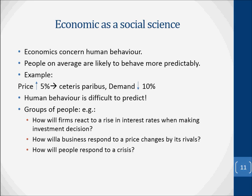Let's move on to economics as a social science. Economics concerns human behaviour. One problem here is that individuals often behave in very different ways — people have different tastes and different attitudes. This problem, however, is not as serious as it may seem at first sight. The reason is that people, on average, are likely to behave more predictably. For example, if the price of a product goes up by 5%, we might be able to predict that the quantity demanded will fall by approximately 10%. This does not mean that every single individual's demand will fall by 10%, only that total demand will. Some people may demand a lot less, others may demand the same as before.